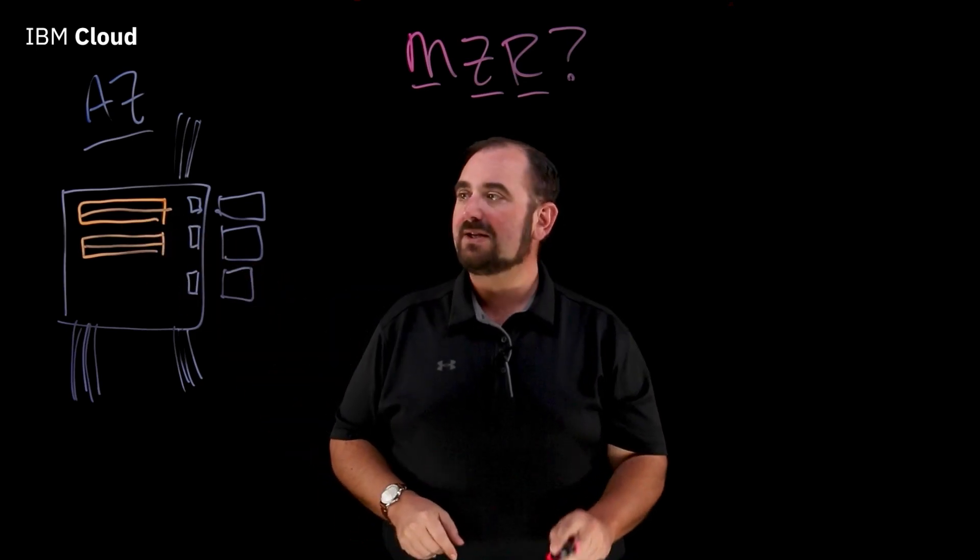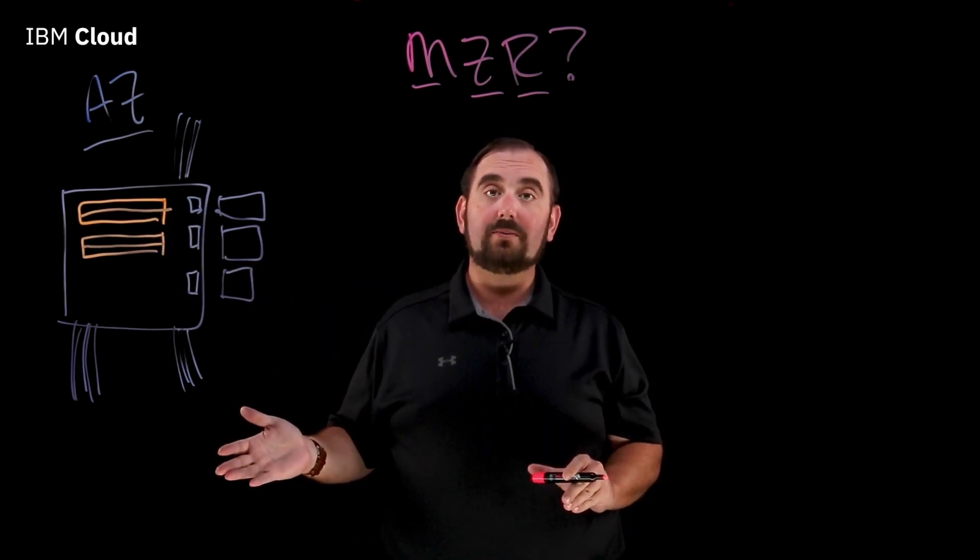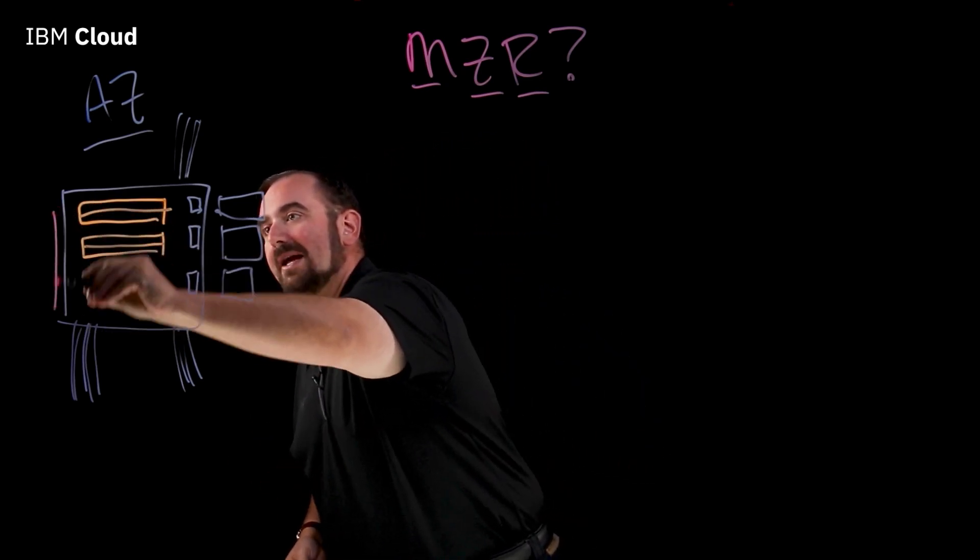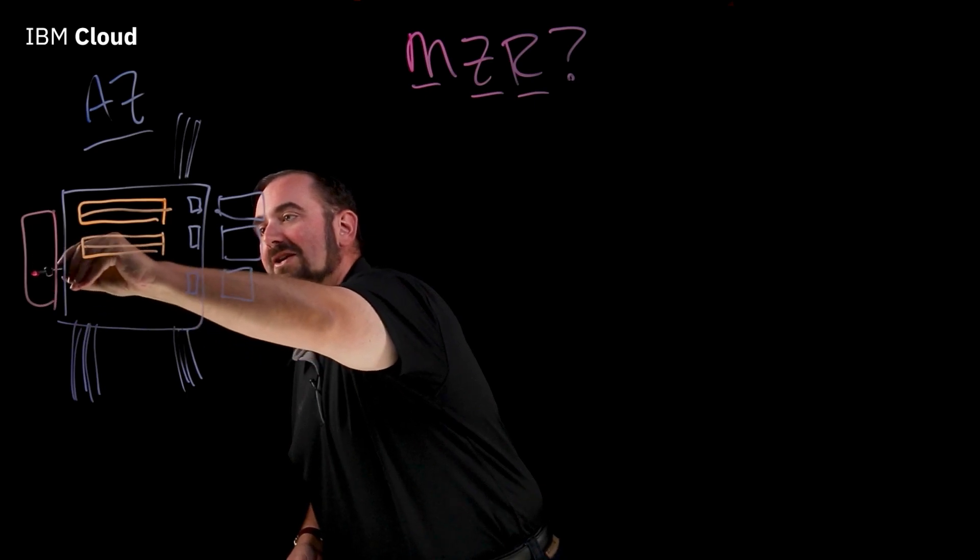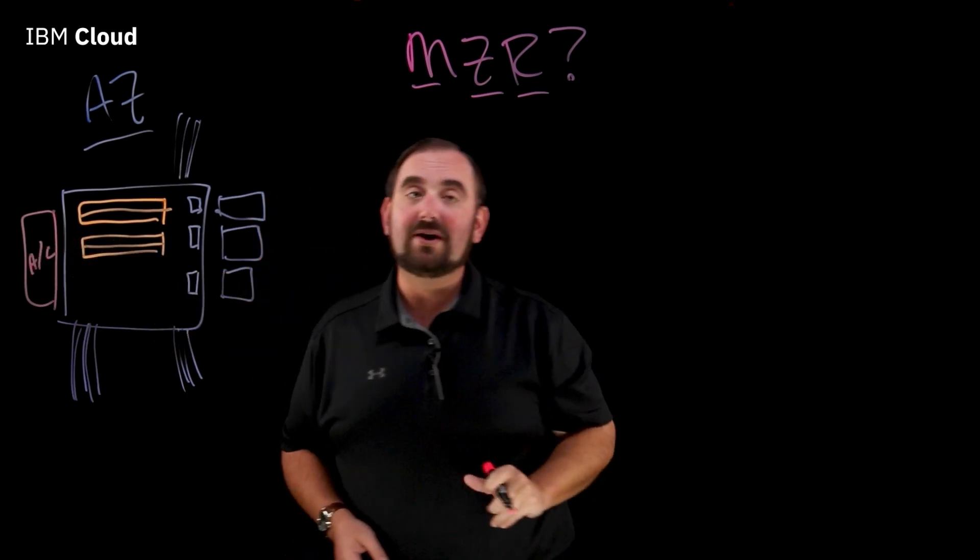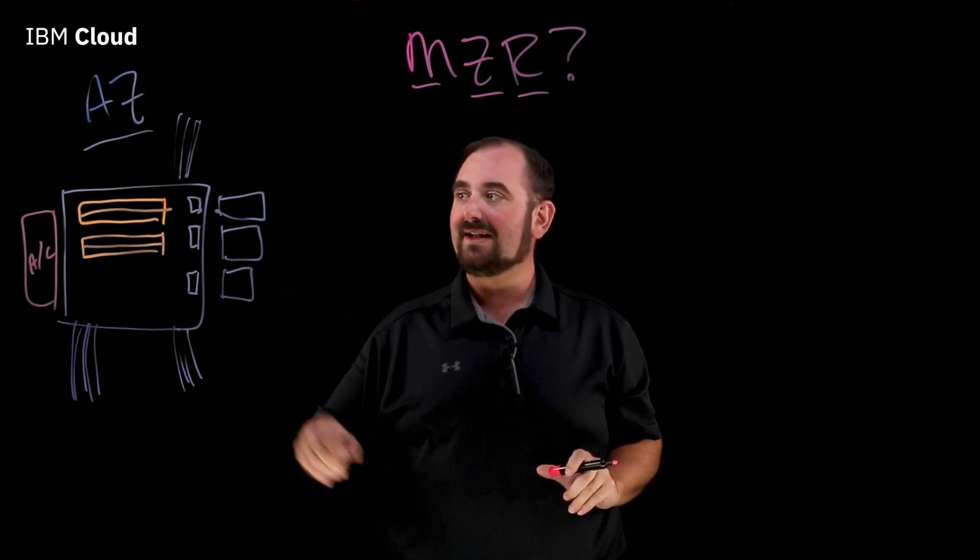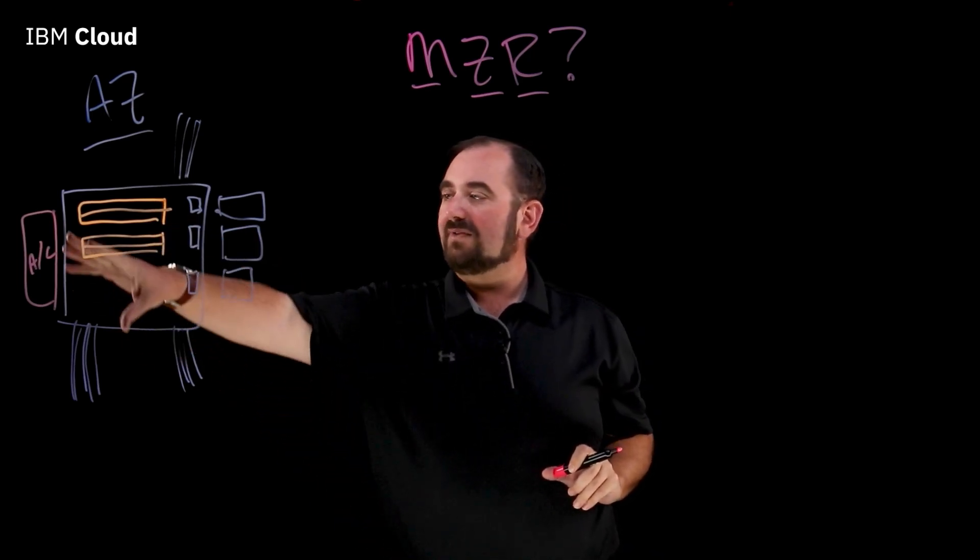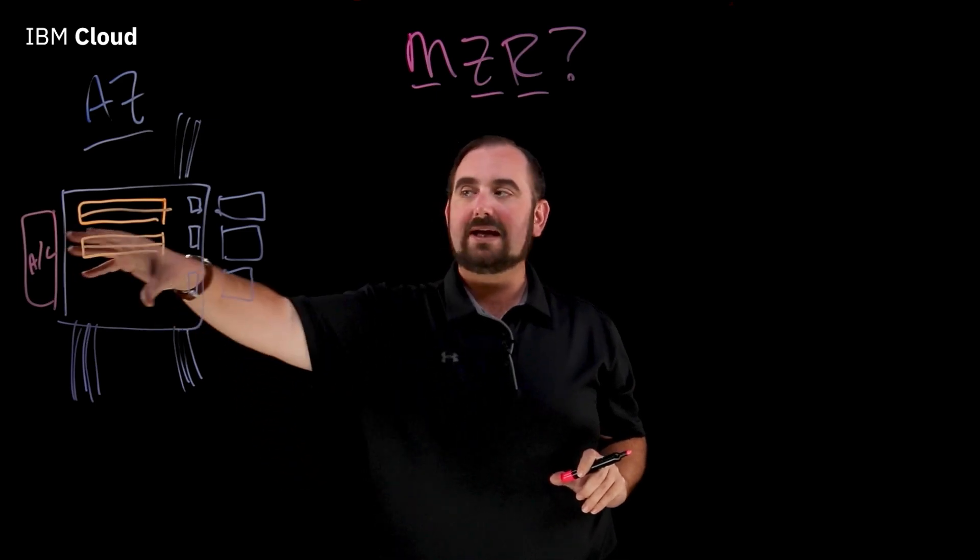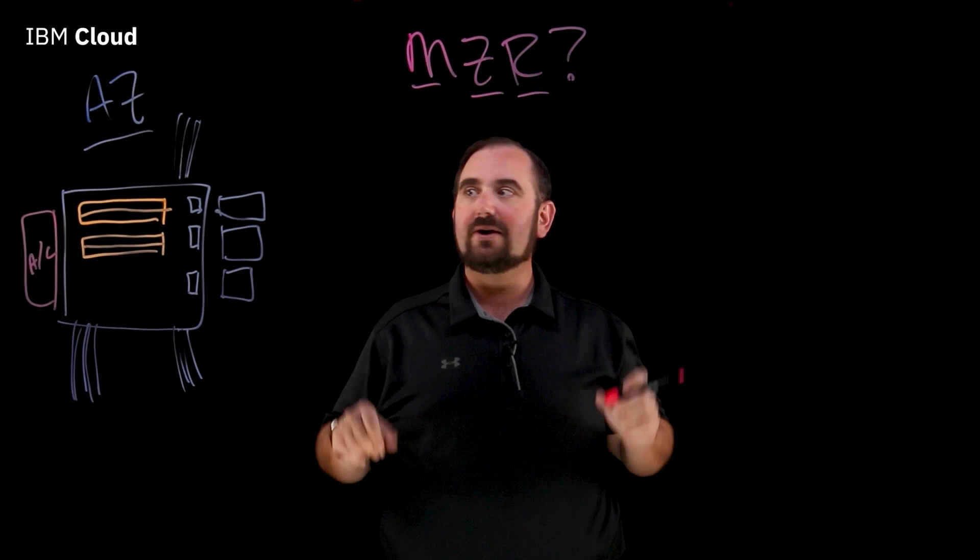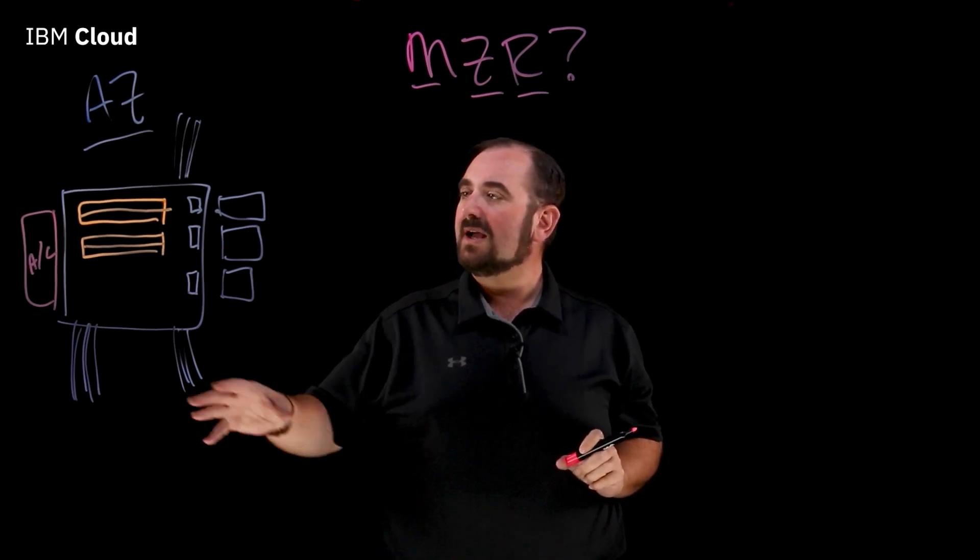And then the last piece that we have is arguably the most important, specifically depending on region. And that's going to be our air conditioning. Because what's the point of having a data center with all of this compute storage and network capacity in it if you can't keep it cool? So, we've got air conditioning keeping everything cool. It's blowing cold air into the cold aisles. We're ducting the hot air out of the hot aisles to get rid of it.